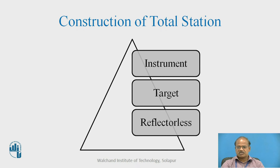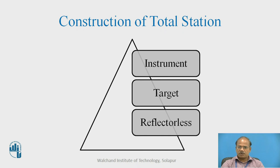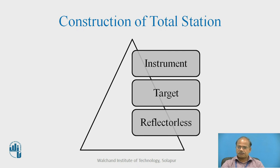The instrument primarily consists of a tribrach, on the top of which you may find a small circular bubble tube for initial leveling. For centering, a laser beam or optical plummet is available. Pinpoint accuracy has to be there for centering. The battery can be provided into the instrument — one must make sure that the battery is fully charged.